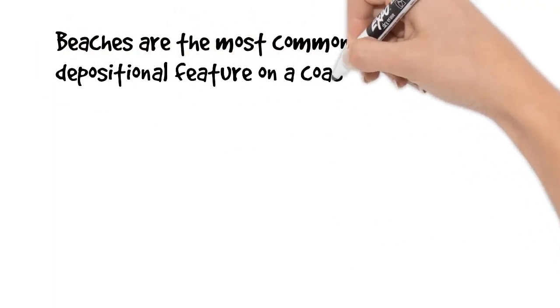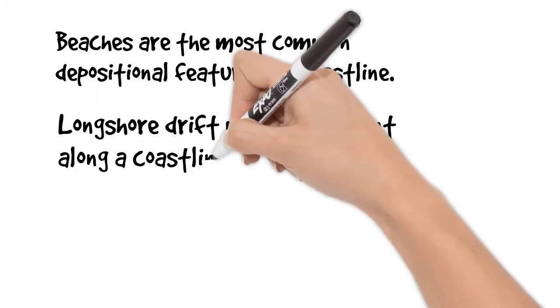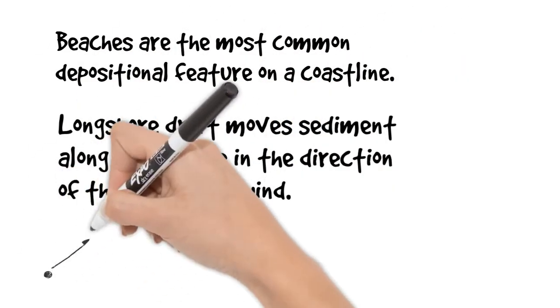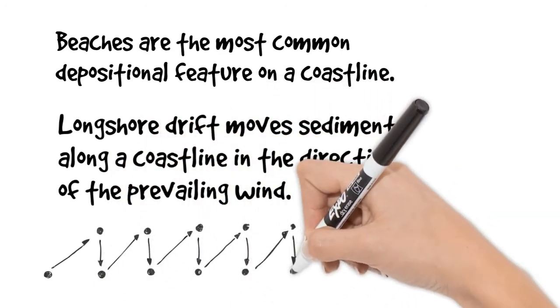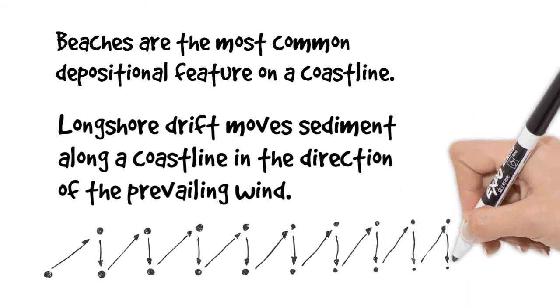Let's remember the beaches are the most common form of deposition found on the coastline and longshore drift moves sediment along the coast in a zigzag motion in the direction of the prevailing wind. In that process sediment is rounded and made smaller as it moves along the coast.